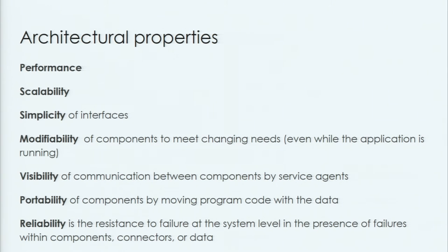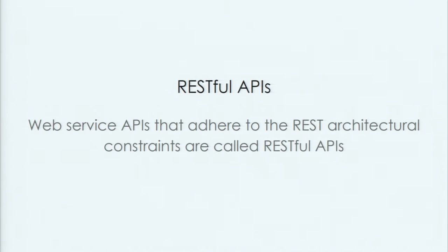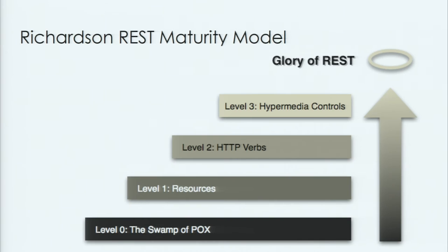Complying with these constraints, REST introduces certain architectural properties. Web service APIs that adhere to the REST constraints are called RESTful APIs. Many people say that a RESTful API uses only HTTP and JSON, but to truly consider an API RESTful it must strictly follow all the rules defined in REST architecture. It's worth being familiar with Leonard Richardson's REST maturity model — a map guiding users to increasing levels of compliance. This model has four levels, where the last one designates a true RESTful API.